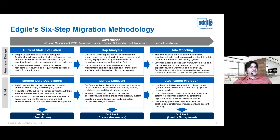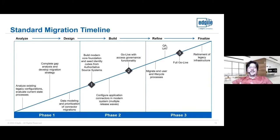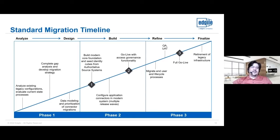A sample timeline: Phase 1 is all analysis and design with very little hands-on keyboard development — maybe some proof of concept. Phase 2 is where building starts, with a go-live for just the core system and then initial joiner, mover, and leaver processes. Phase 3 is the full go-live with all downstream systems currently in the legacy system so we can retire it. From there, it's ongoing feature enhancements, new application onboarding, and building on the foundation we've set.